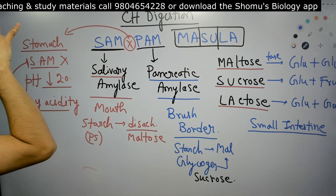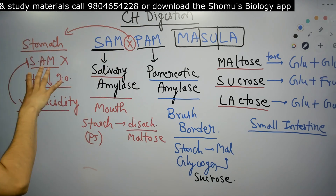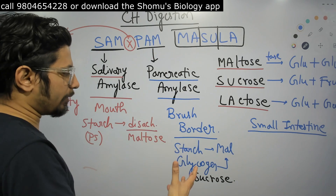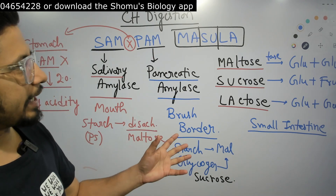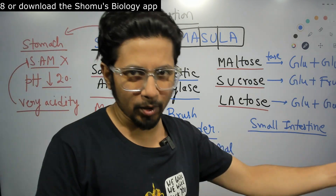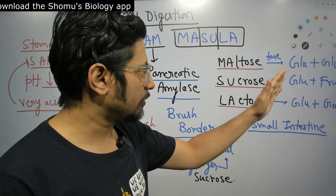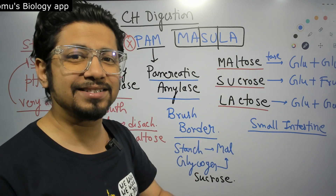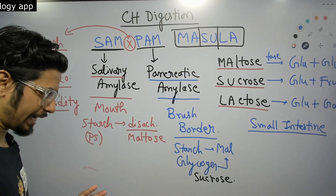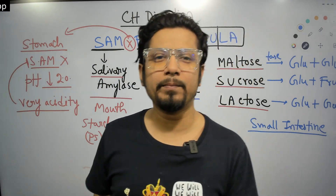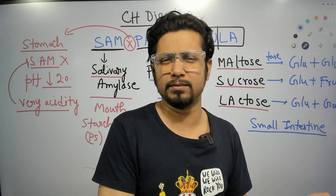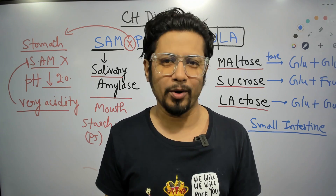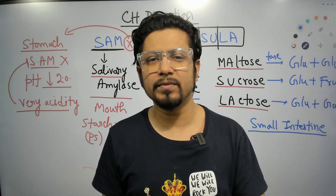SAM = Salivary Amylase: digestion begins in the mouth, but no digestion occurs in the stomach due to high acidity, which renders salivary amylase inactive. PAM = Pancreatic Amylase: works at the brush border, breaking down polysaccharides into disaccharides. MASULA = in the small intestine, maltose is broken down to glucose + glucose, sucrose to glucose + fructose, and lactose to glucose + galactose, by maltase, sucrase, and lactase respectively. This mnemonic covers the majority of carbohydrate digestion.